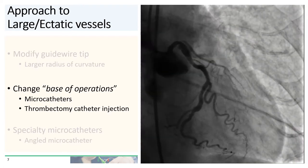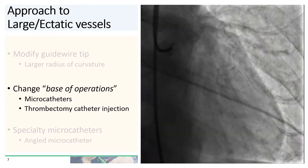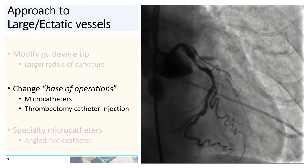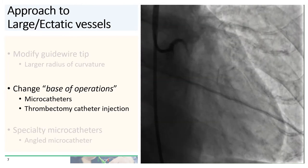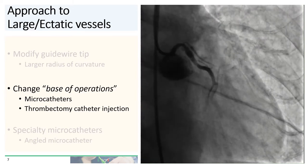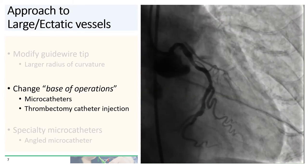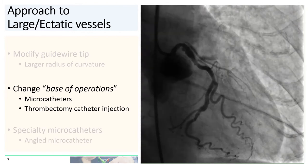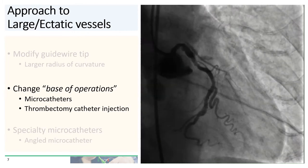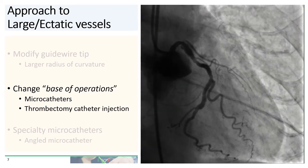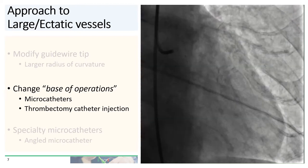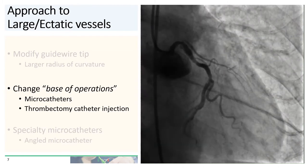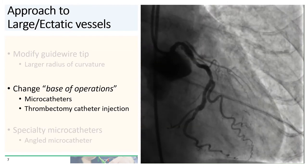The second thing you can do is change the base of operations by positioning a microcatheter in the body of the aneurysm. That allows you to bring the wire closer to the wall of the aneurysm, giving it more likelihood to engage the outflow. You can also inject contrast into the aneurysm to better clarify the course of the outflow. Contrast injection can be done through microcatheters, although the lumen within thrombectomy catheters such as the Priority One gives you the capacity to inject more contrast.